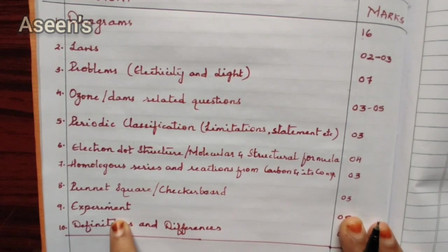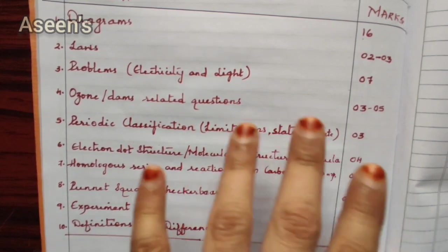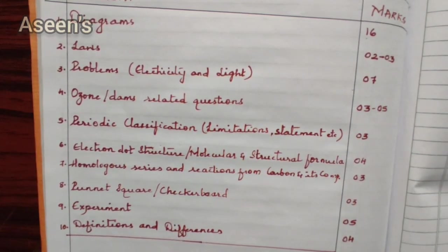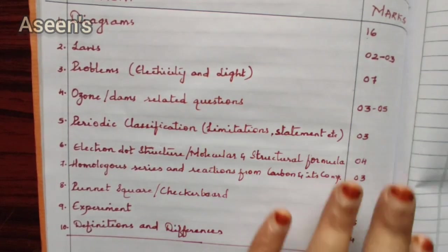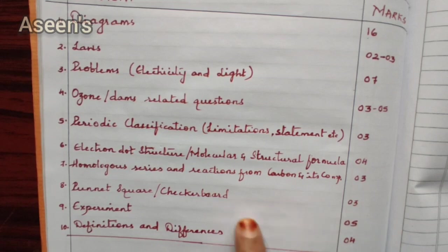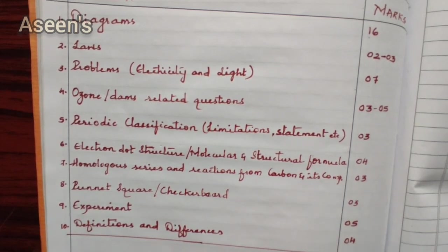A new addition this time is experiments — a total of five marks will be given here. They might ask about the principle and working of either a generator or a motor, or experiments on finding focal length. I will be giving a list of experiments to study in my upcoming videos. Experiments are a new addition this time; they have never been asked in question papers before, so we need to keep our eyes on this.